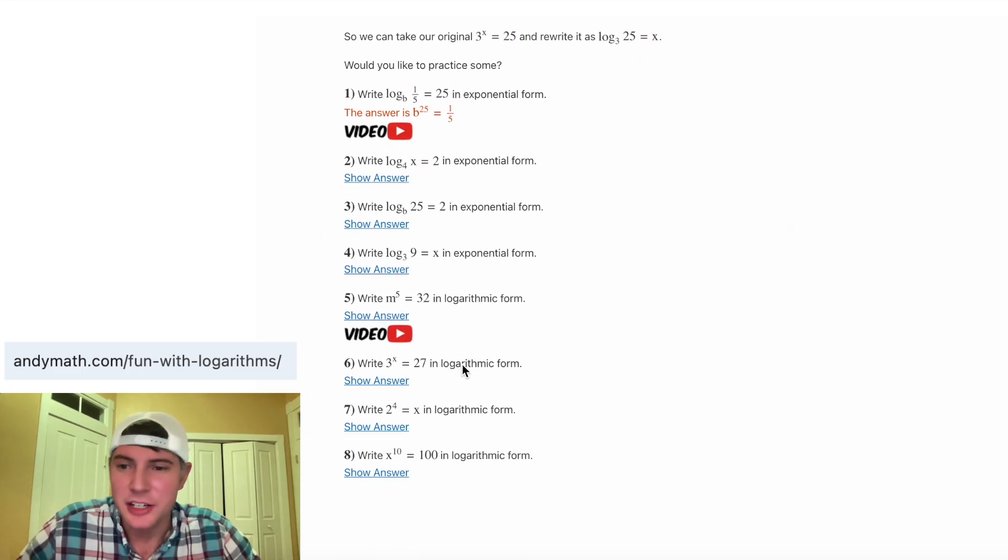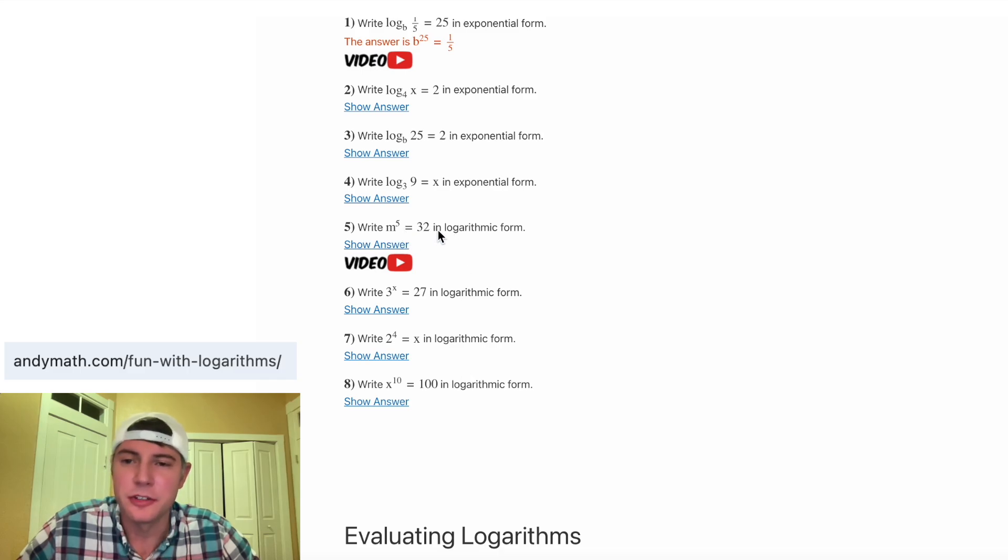2 through 4 are the same thing, but number 5 changes. It says m to the 5 equals 32 in log form. So let's do number 5.